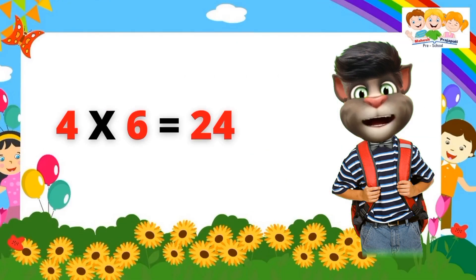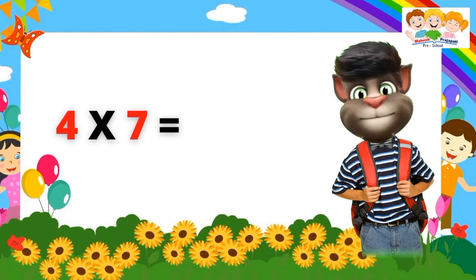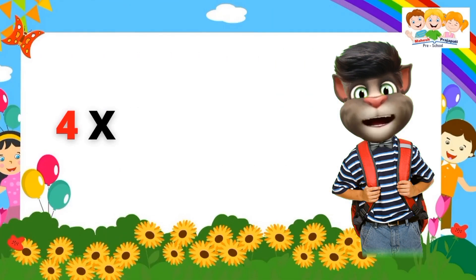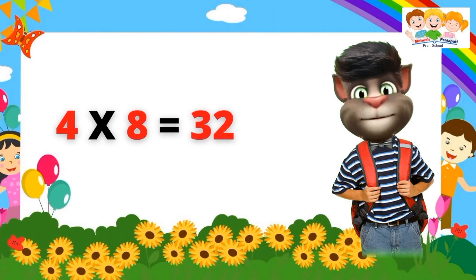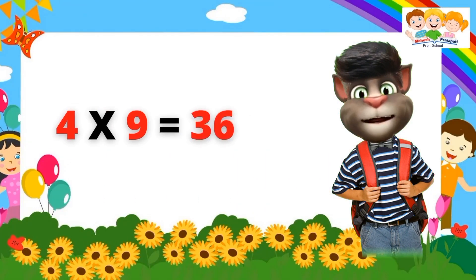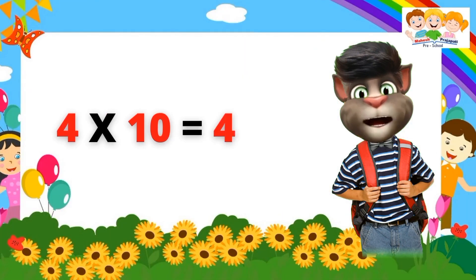Four sixes are twenty-four. Four sixes are twenty-four. Four sevens are twenty-eight. Four eights are thirty-two. Four nines are thirty-six. Four tens are forty.